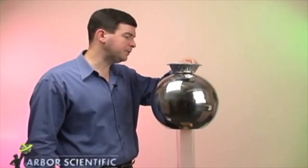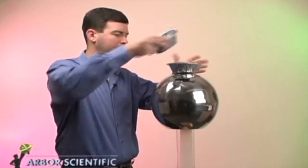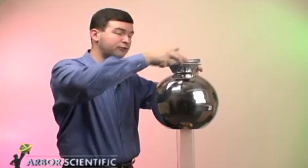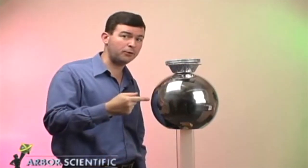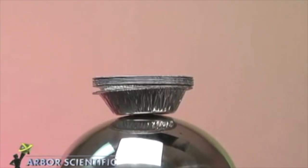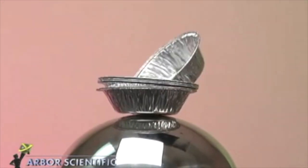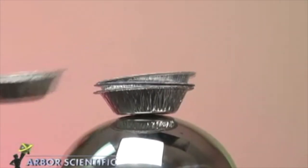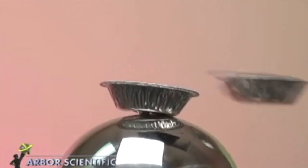If I place a few aluminum pie plates on top of the dome and turn the crank, electrical charge will be transferred from the dome to the top plate. When it has accumulated enough charge, the top plate flies off. As I continue to crank, the other pie plates soon follow suit.